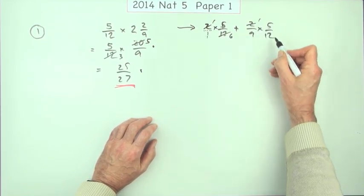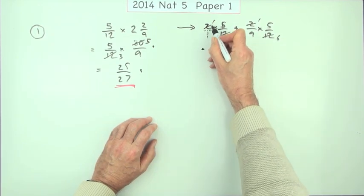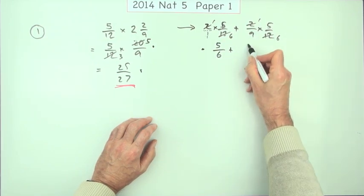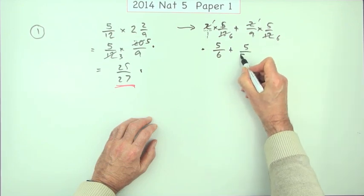So you've got 2 into 2 goes 1, 2 into 12 goes 6, 2 into 12 goes 1, 2 into 12 goes 6. So what that says is you've got 5/6 plus, and that's going to be 5/54.